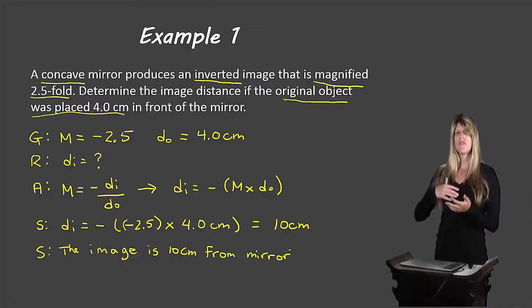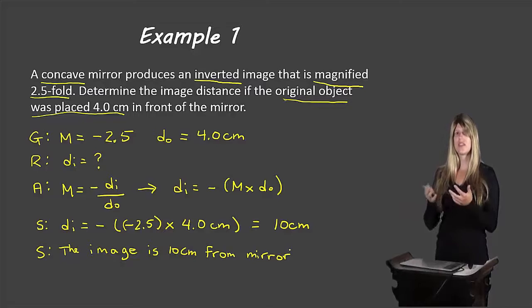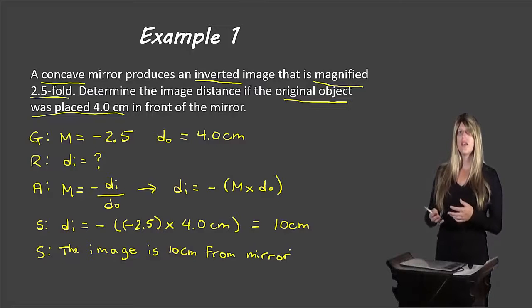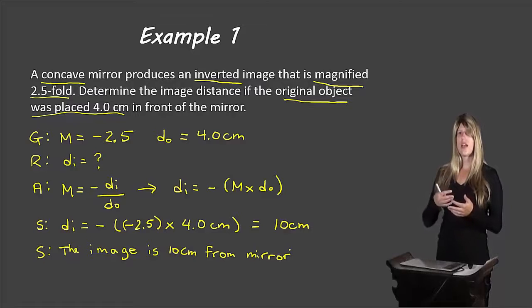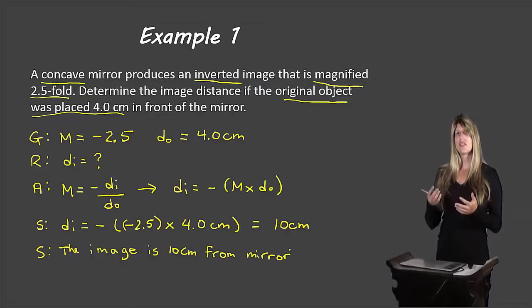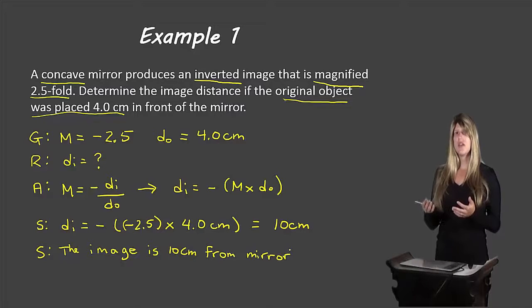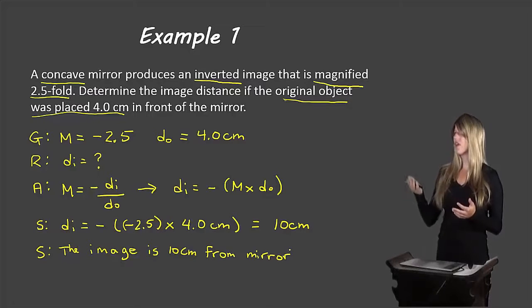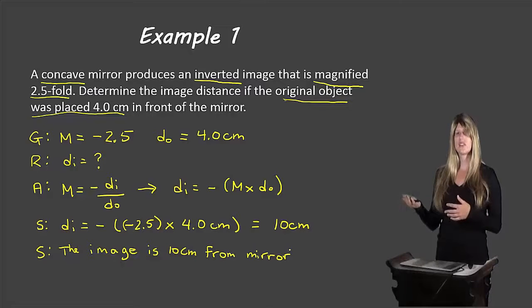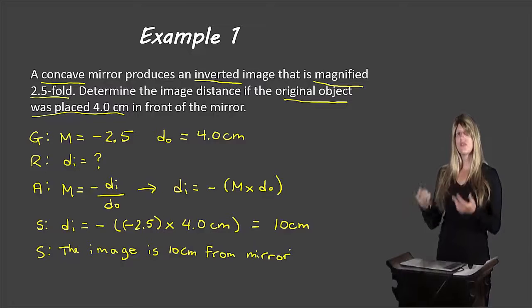Since we have real and inverted, we know we have the right combination for a concave mirror. If the problem had told us the mirror produces an upright image, upright images for a concave mirror only exist in the virtual form, and then our DI should have been a negative answer. So always check that your answer makes sense for the type of mirror you're working with.